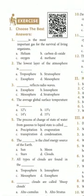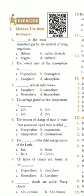Now a few questions. Choose the best answer. First: which is the most important gas for the survival of living organisms? That is oxygen — option C. Second: the lowest layer of the atmosphere is the troposphere — option A. Third: which reflects radio waves? That is the mesosphere — option C.